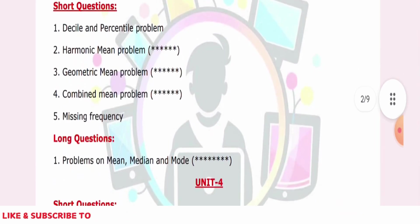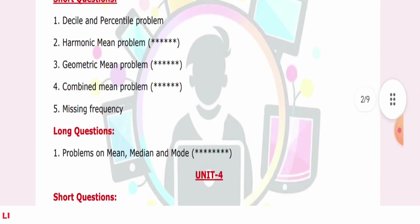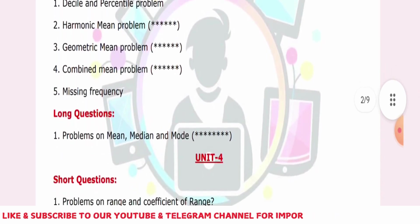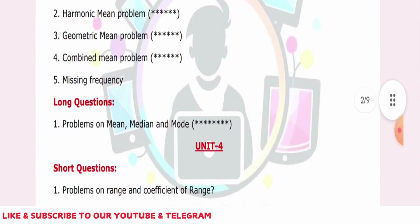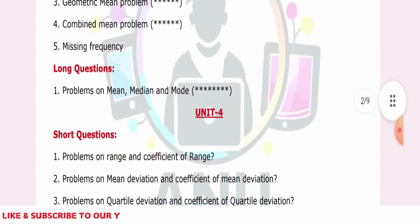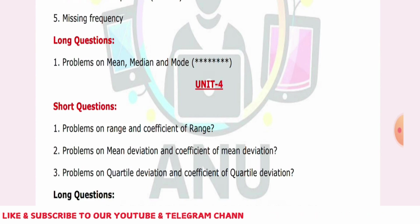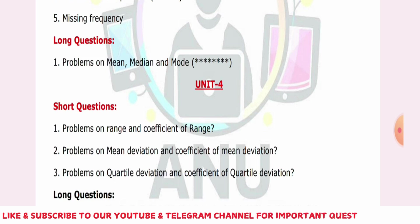Unit 4 has problems on range and coefficient of range, mean deviation and coefficient of mean deviation. Next, quartile deviation and coefficient of quartile deviation problem. The long answer is very important: who is more intelligent, who is more consistent, who is more talented, who is the best performer?